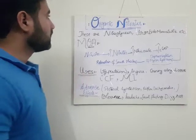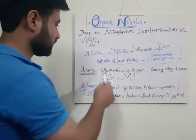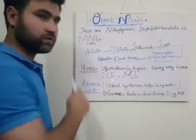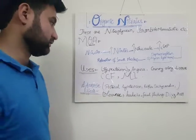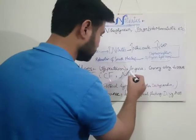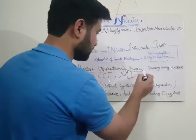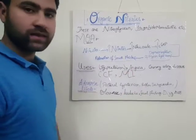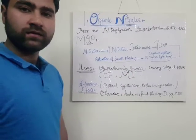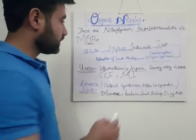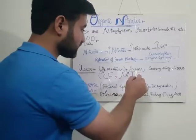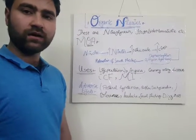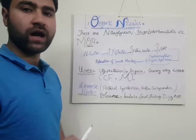Uses: organic nitrates are used in the treatment of hypertension because these cause vasodilation. These are also used in the treatment of angina. First, these cause vasodilation of the veins, due to which the oxygen delivery to the heart is increased and angina is relieved.